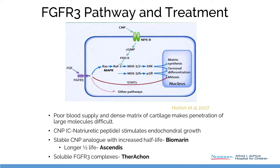The FGFR3 receptor is activated, and the downstream impact reduces endochondral bone growth. Most systems in biology have feedback, and here it is: CNP, C-natriuretic peptide, works through an NPR receptor to up-regulate bone growth. So you can imagine they're being turned on and off all the time.